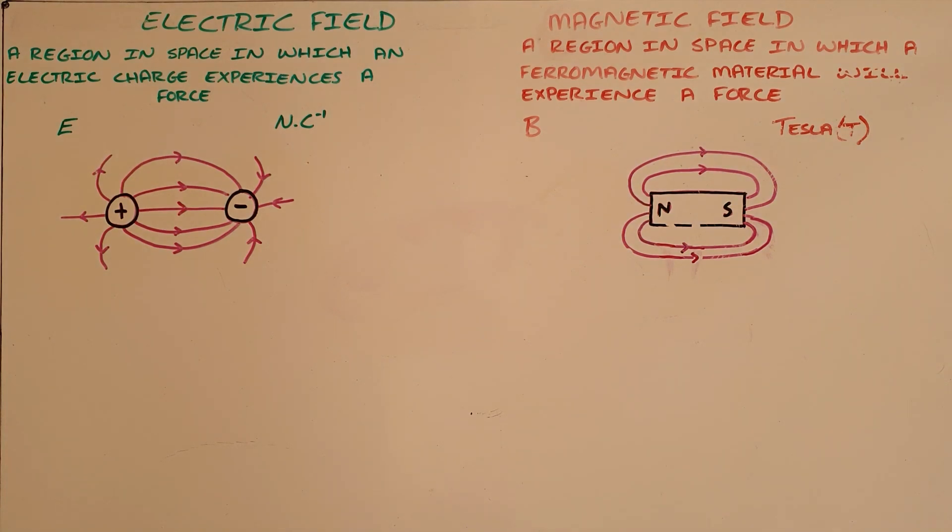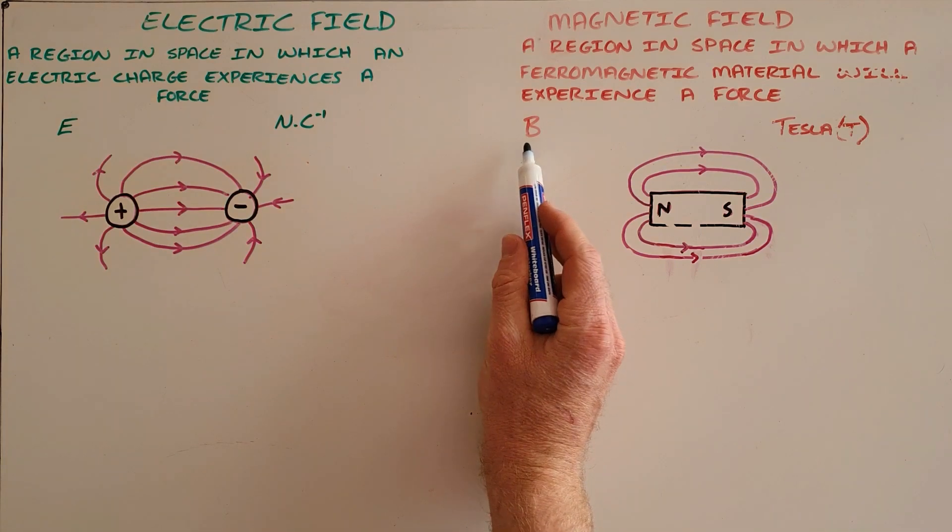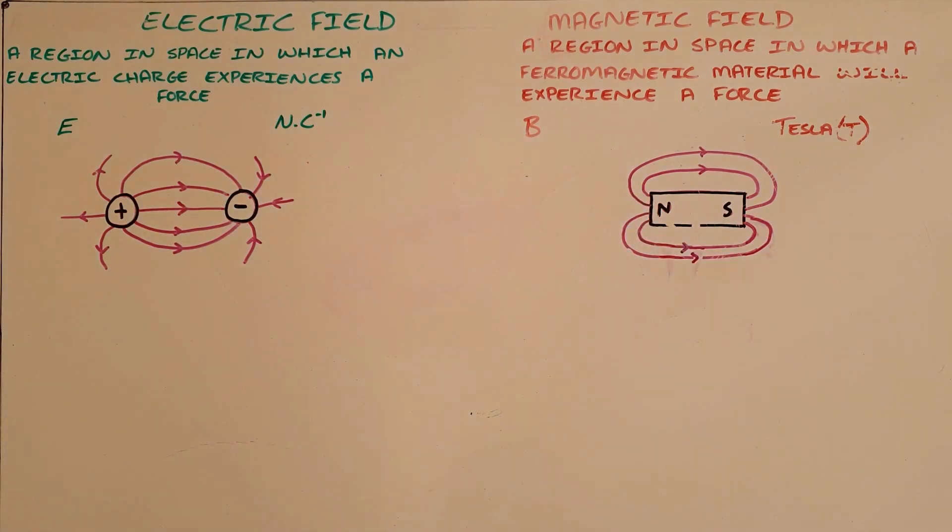And magnetic fields are something completely separate to that, where they are a region in space in which a ferromagnetic material will experience a force with the symbol letter B and measured in Tesla, where magnetic field lines are always drawn directed from the north pole to the south pole of a magnet.